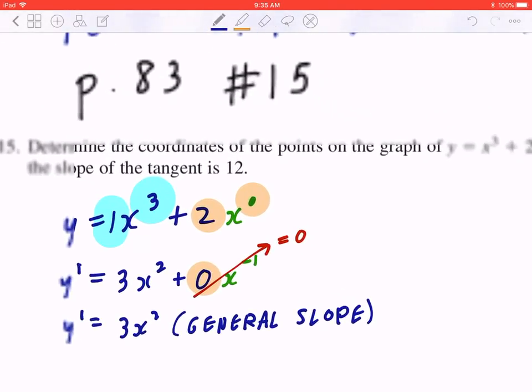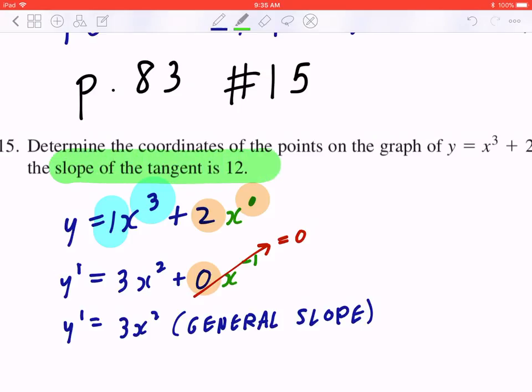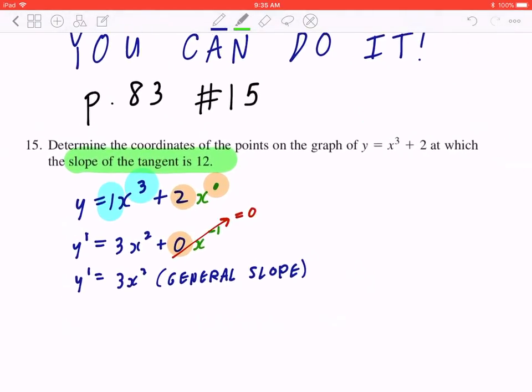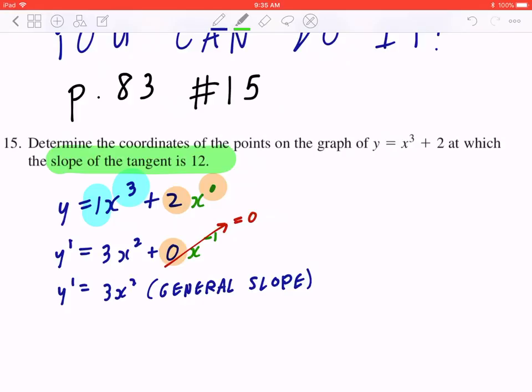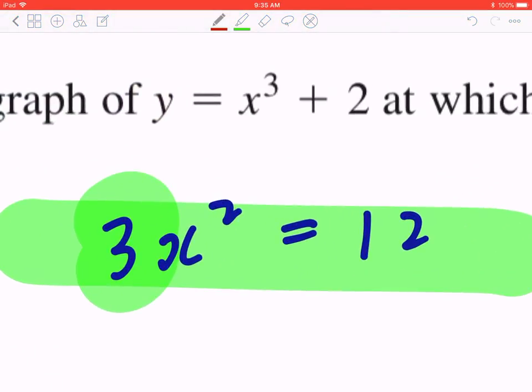Step 2: If you look at the specific slope that's given to you, the slope is going to be 12. If you can find these coordinates, that means you can equate the general slope with the specific slope. So 3x squared equals 12. And be mindful that the exponent tells you the maximum number of solutions. In this case, since it says x squared, maximum 2 solutions.